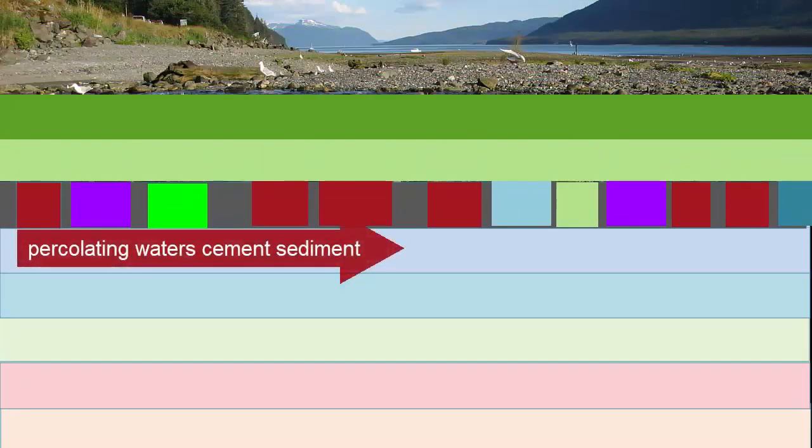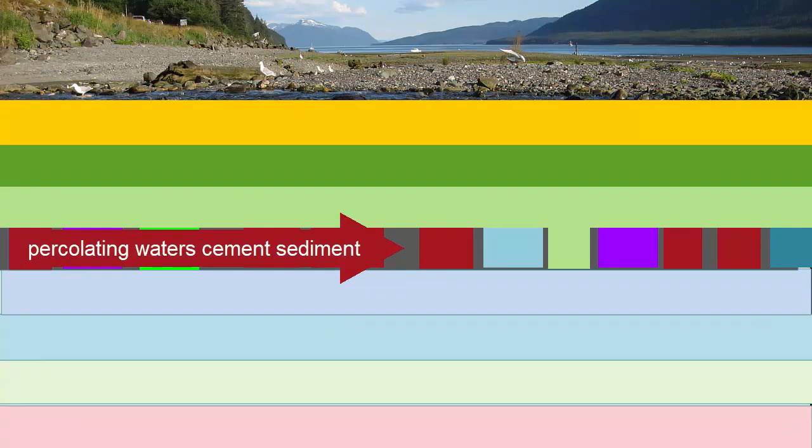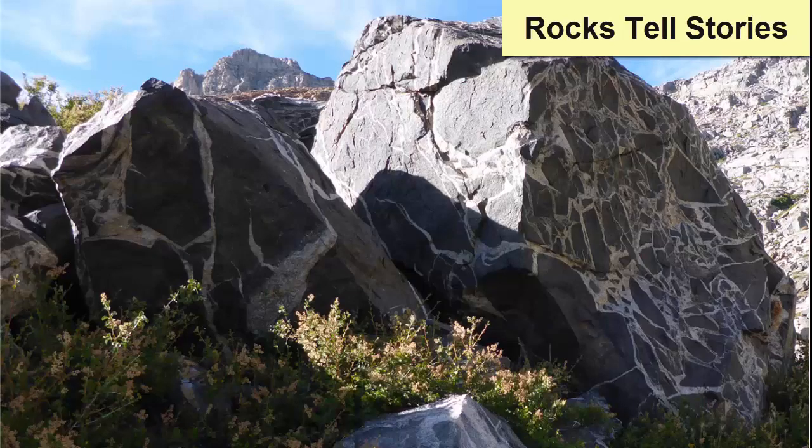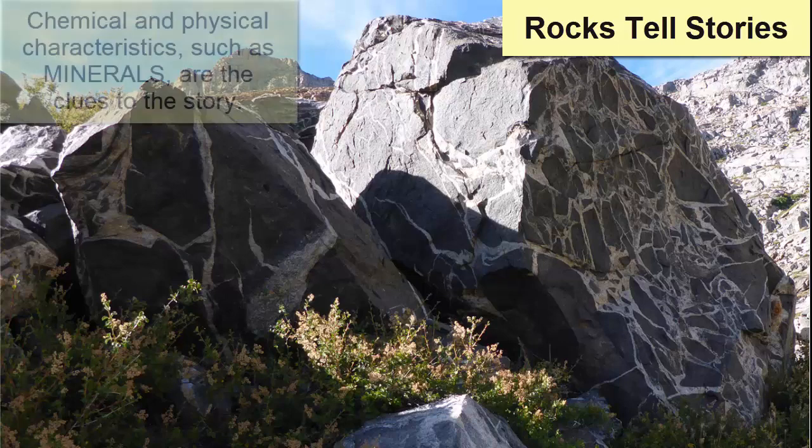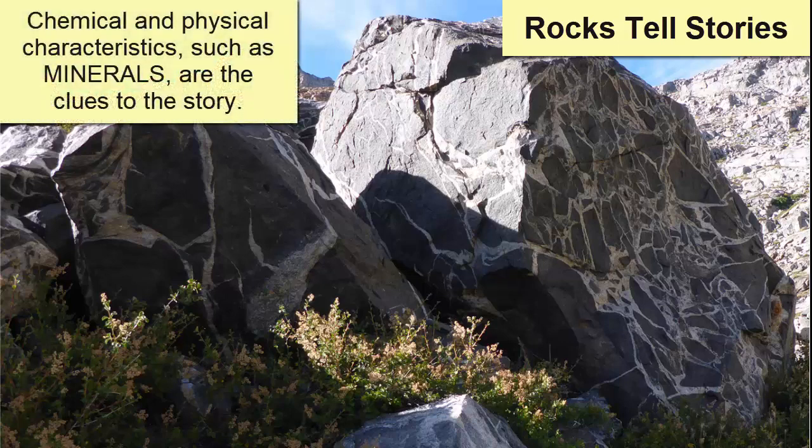Over time the lava flow will break down, weather, and small pieces will collect in low-lying areas such as riverbeds. And after being buried by other sediment, percolating waters can cement the grains together to create a new sedimentary rock. When we later find this rock on Earth's surface, we use chemical and physical clues in the rock to peer into its complex history.